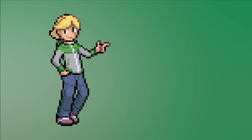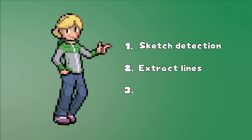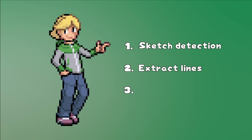To solve this game, there are three steps involved. First, we have to detect our part of the drawing. Next, we have to convert this information into a set of lines to follow, and finally, we have to move the cursor to actually draw the lines.